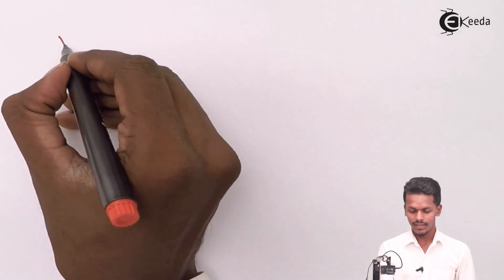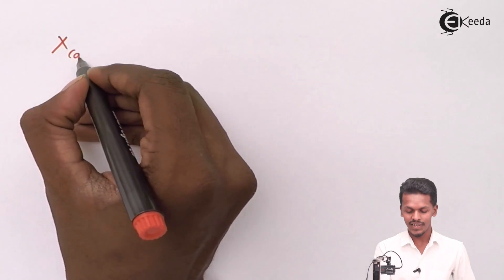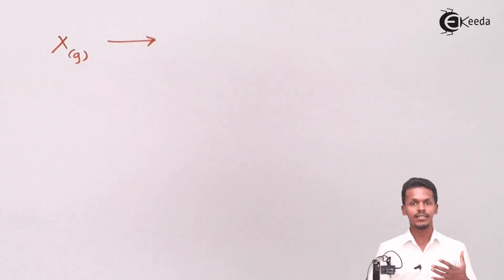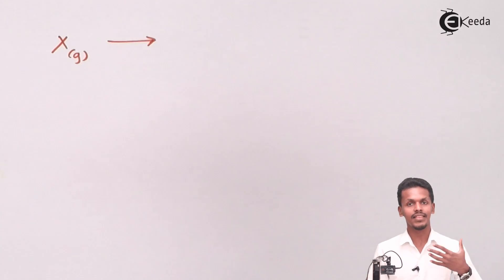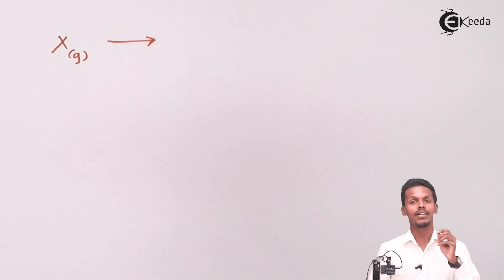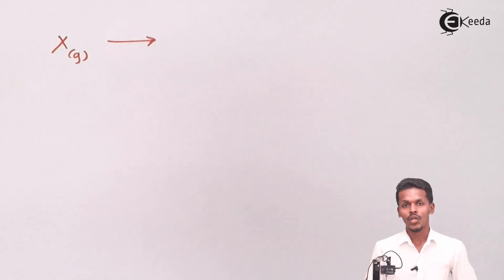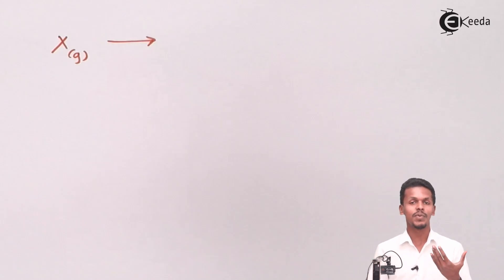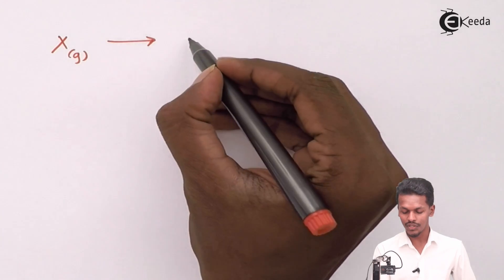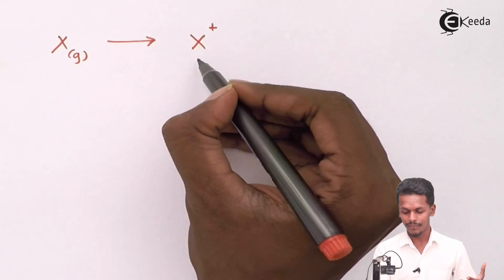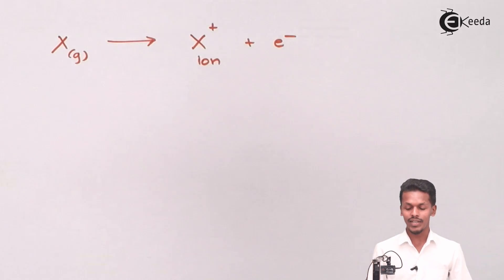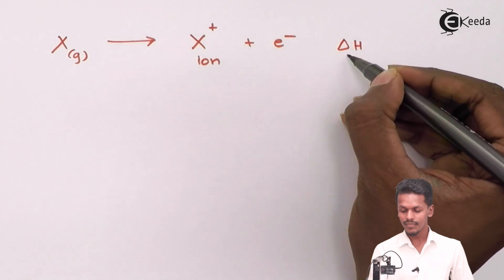Suppose we have an atom named X present in a gaseous state. The atomic size in this case will be more, and there will be an electron which is loosely held in the overall atom. We have to remove that electron, and the energy required to remove it is known as ionization enthalpy. Once the electron is removed, X is turned into an X plus ion.